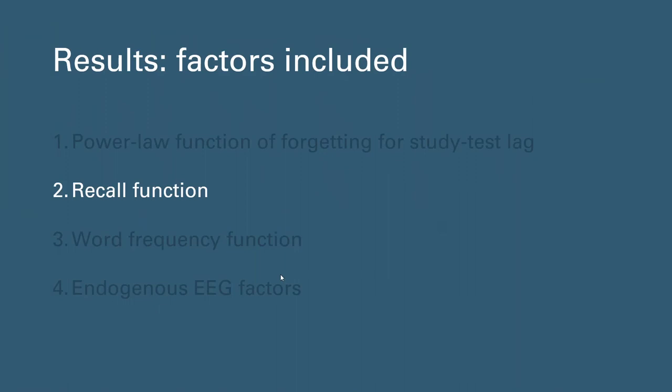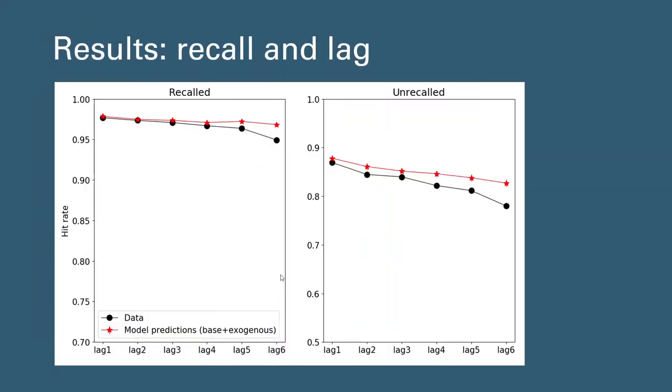Second, for the recall function that improves drift rate for previously recalled items. When looking at recall and lag together, if we compare the two panels that show the changes in hit rates with increased study-test lag, we can see that inclusion of the recall function boosted the model predicted accuracy for previously recalled items compared to unrecalled items, and that the memory decay is more obvious for items that weren't recalled immediately after the study phase.